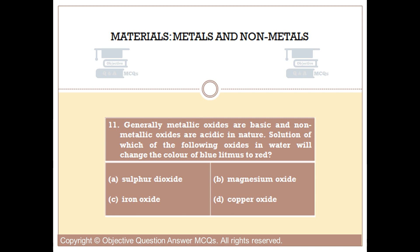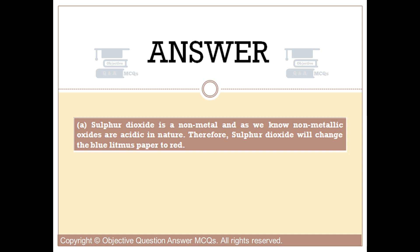The right answer is option A. Sulfur dioxide is a non-metal oxide, and as we know, non-metallic oxides are acidic in nature. Therefore, sulfur dioxide will change the blue litmus paper to red.